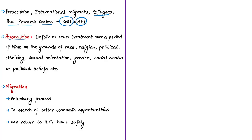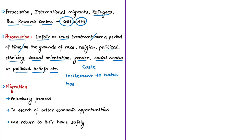Persecution refers to cruel or unfair treatment over a period of time on grounds such as race, religion, political preference, ethnicity, sexual orientation, gender, caste, or social status. It includes incitement to hate, hostile behavior, imposing restrictions on a community, harassment, arrest, imprisonment, torture, murder, and execution — all based on identity grounds such as religion or ethnicity.